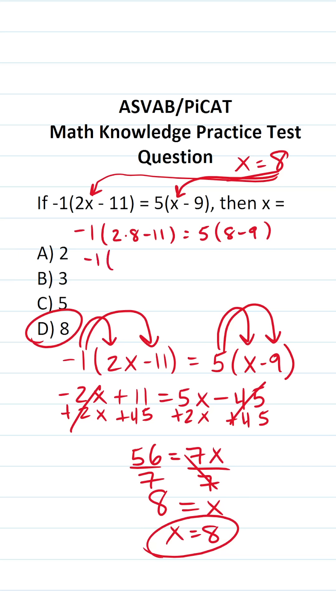This becomes negative 1 times... 2 times 8 is 16. So this is 16 minus 11 equals 5. What is 8 minus 9? That's going to be negative 1. This becomes negative 1 times... 16 minus 11 is going to be 5 equals 5 times negative 1.